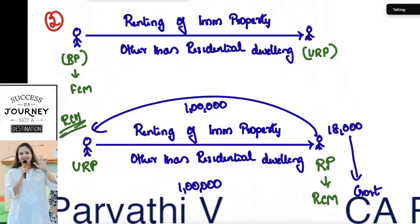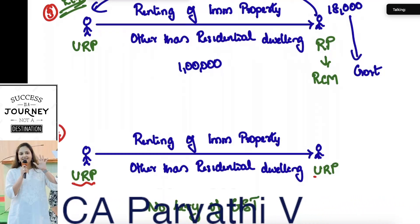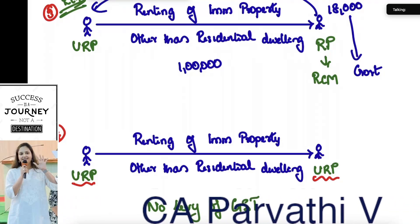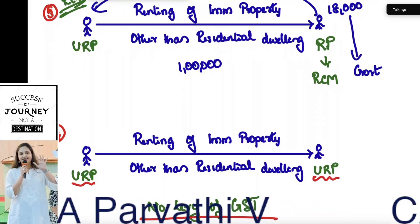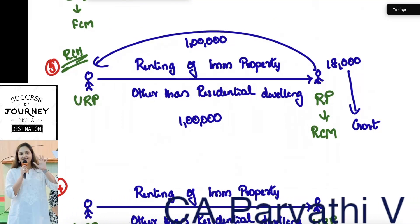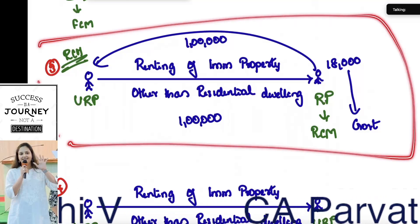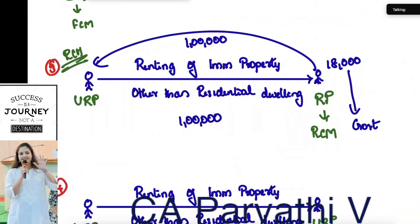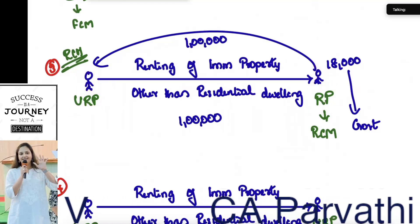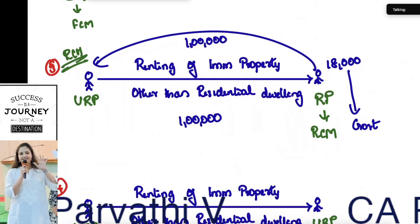The fourth situation: what if the supplier is an unregistered person and the recipient is also an unregistered person? In this case, it is neither FCM nor RCM — there is no levy of GST. What you need to understand is, if it is renting of any immovable property other than residential dwelling, RCM is applicable only when the supplier is an unregistered person and the recipient is a registered person. That is the only situation where RCM is applicable.